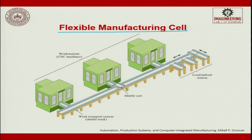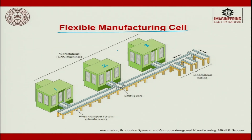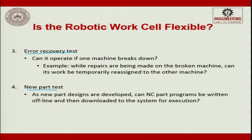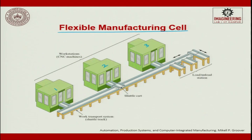In a flexible manufacturing cell, we have 2 or 3 machines. A part moves from station 1, undergoes an operation, goes back, then goes to station 2, undergoes an operation, then station 3. Some parts may use only stations 1 and 3, bypassing station 2. Importantly, if station 2 fails, we should be able to add another machine and continue the load — this is the error recovery test: work is temporarily reassigned to another machine.